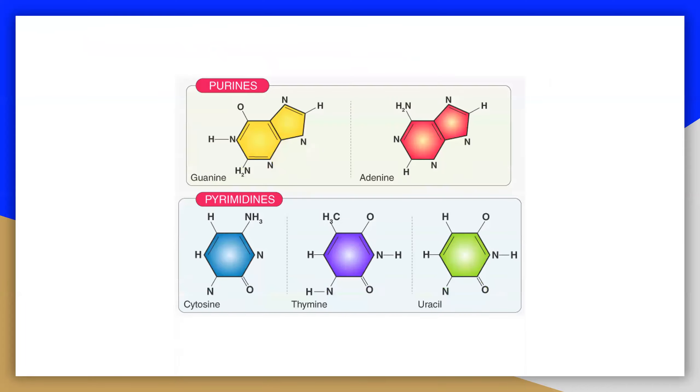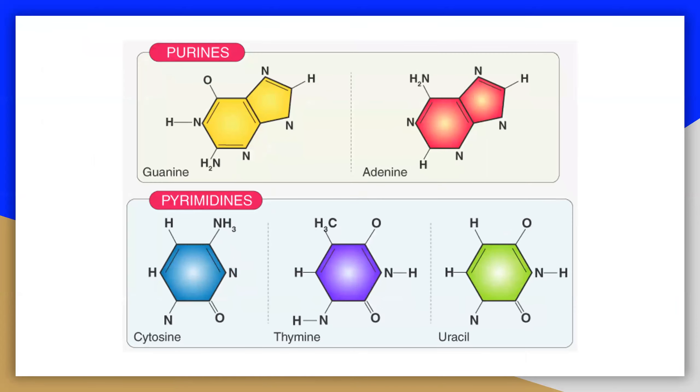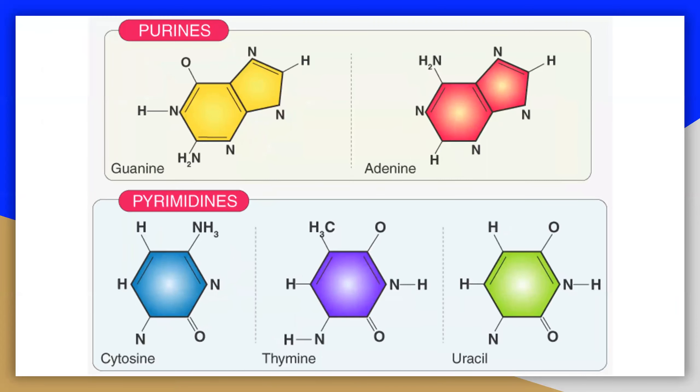Each of these basic carbon nitrogen rings has different functional groups attached to them. In molecular biology shorthand, the nitrogenous bases are simply known by their symbols A, T, G, C, and U.